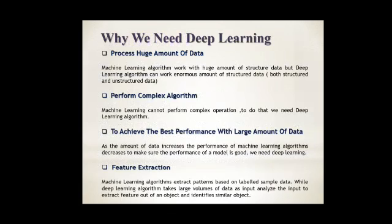Perform complex algorithm. Machine Learning cannot perform complex operations. For doing that, we need Deep Learning. To achieve the best performance with large amount of data, as the amount of data increases, performance of Machine Learning decreases. To make sure that performance is good, we need Deep Learning.